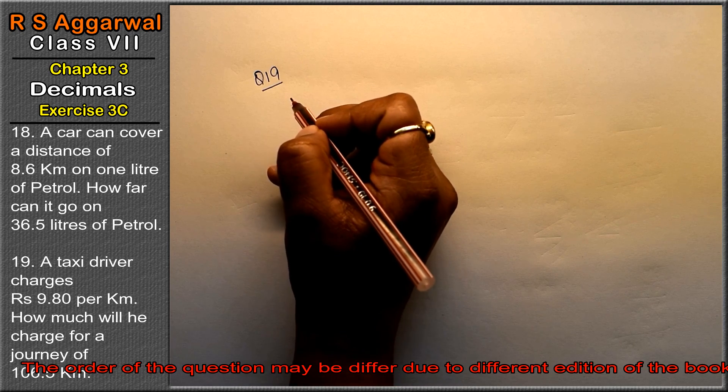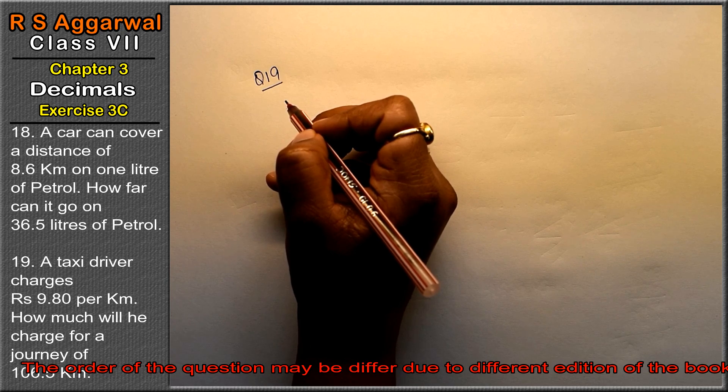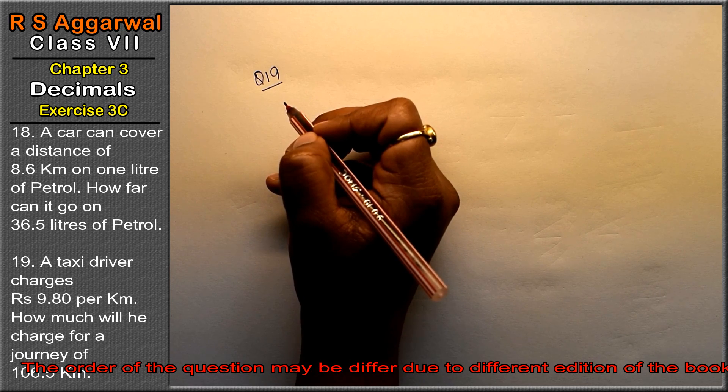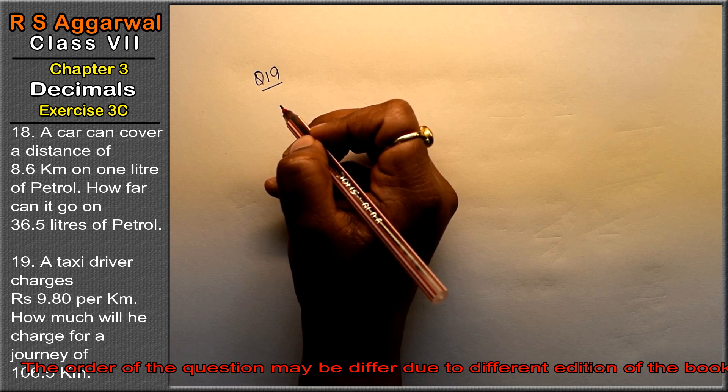Let's do question number 19 of exercise 3C, that is decimals. Question number 19 is: A taxi driver charges rupees 9.80 per km. How much will he charge for a journey of 106.5 km?